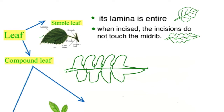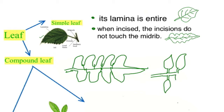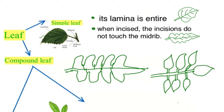When the incision is up to the midrib, the leaf lamina splits into many small leaf-like structures called leaflets. Such leaves are called compound leaves. The lamina breaks down into many leaflets.